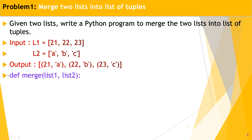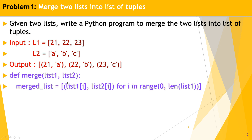So what is the code? Create your own method — the definition is called 'merge', taking list1 and list2 as parameters. In the body of the merge method, use a for loop: for variable i in the range of the length of list1. If list1 has 3 elements, the range is 0 to 3, with 3 excluded.